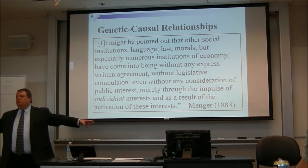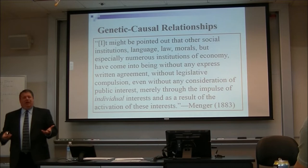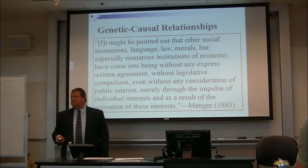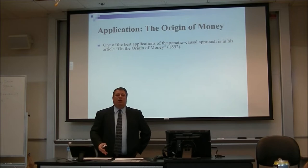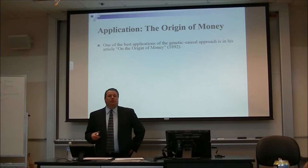You'll pick up a book on pirates and wonder, what's going on? How is this Austrian economics? Well, it is because it's following the Mengerian approach. Menger then wrote a couple of applications of this, and the most famous one is his origin of money. Where did money come from? He wrote this article on the origin of money back in 1892, demonstrating his approach.